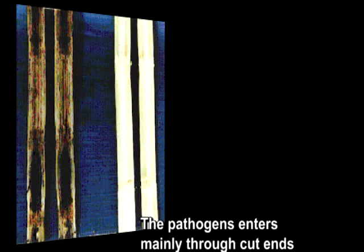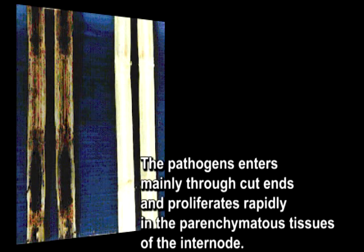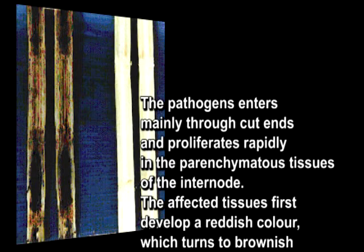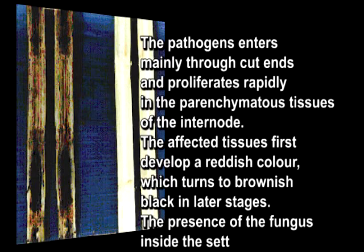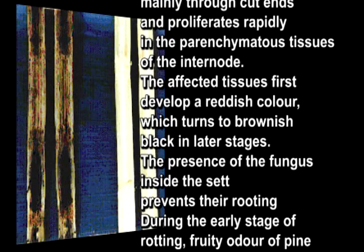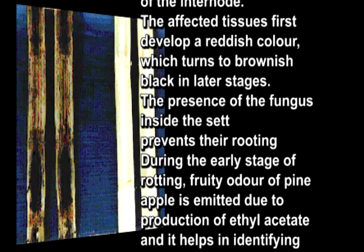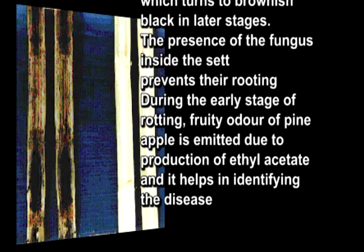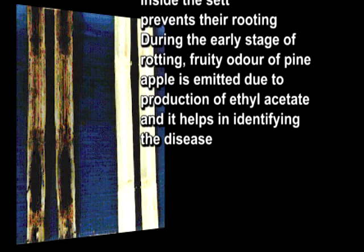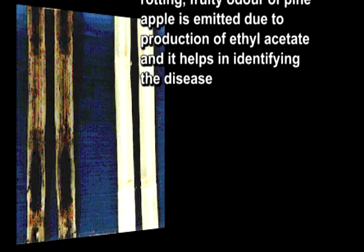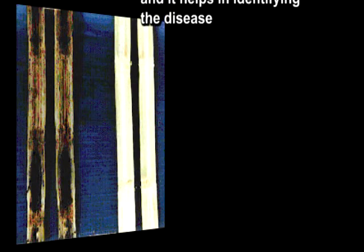Set rot or pineapple disease is common in germinating sets, caused by the fungal pathogen Ceratocystis paradoxa. Typical disease symptoms are detected in sets after 2-3 weeks of planting. The pathogen enters mainly through cut ends and proliferates rapidly in the parenchymatous tissues of the internode. The affected tissues first develop a reddish colour which turns to brownish-black in later stages, and the presence of the fungus prevents rooting. During the early stage, a fruity odour of pineapple is emitted due to production of ethyl acetate, which helps in identifying the disease.